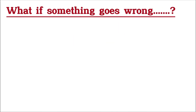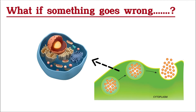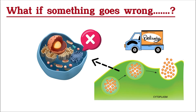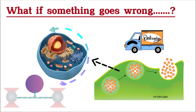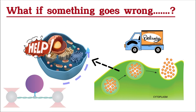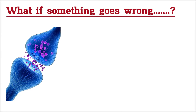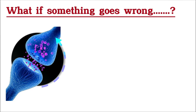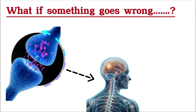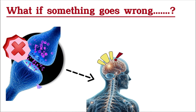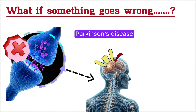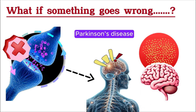You've seen how essential exocytosis is for the cell to function properly, but like any delivery system, things can go wrong. If neurotransmitters aren't released properly during exocytosis, it can affect your nervous system and lead to neurological disorders. A malfunction in regulated exocytosis can contribute to conditions like Parkinson's disease, where the proper release of chemicals in the brain gets disrupted.